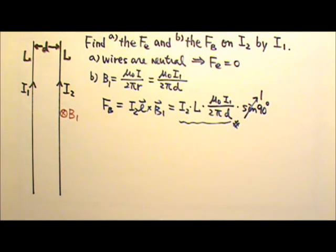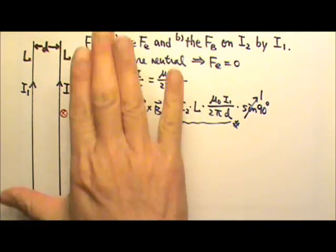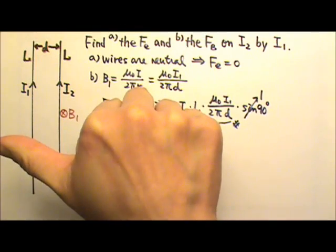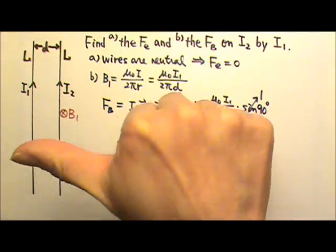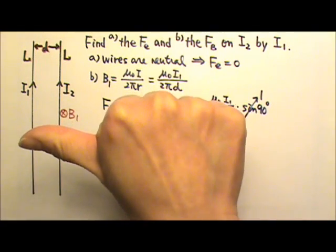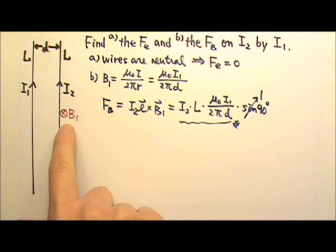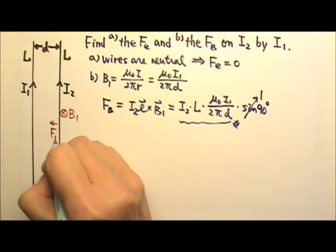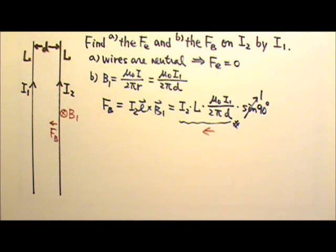But we still need to find the direction of the magnetic force, so we have to do L cross B. So L goes up, B goes into the page. If I do L cross B, my thumb goes to the left. So the magnetic force acting on I2 goes to the left. That's a leftward force.